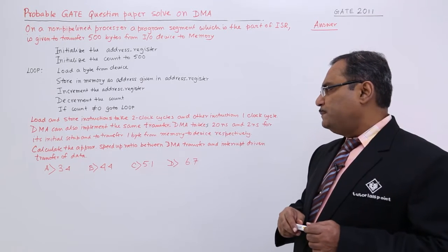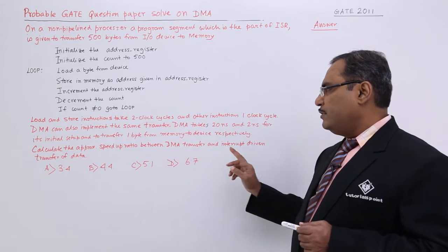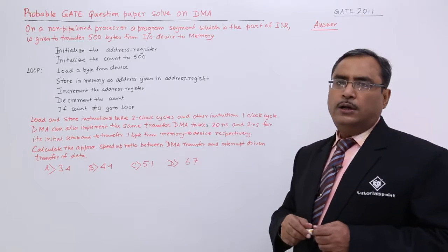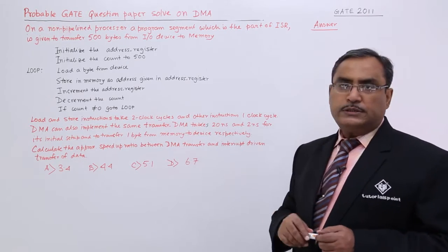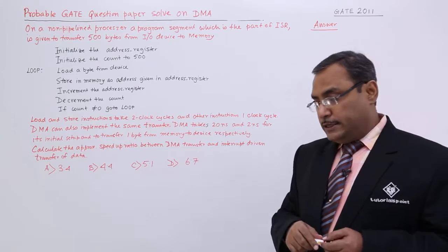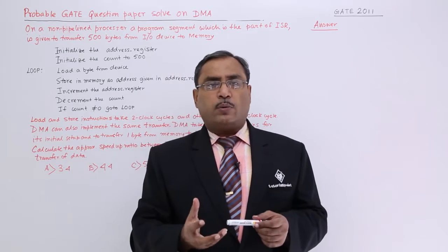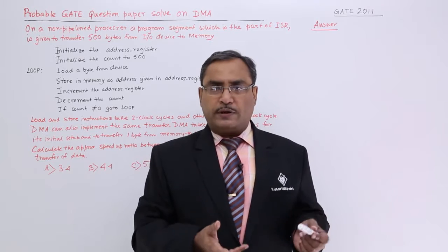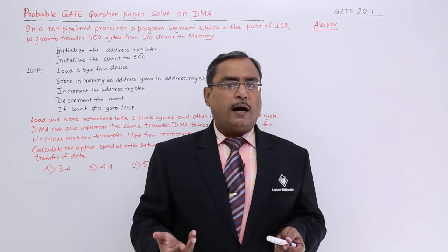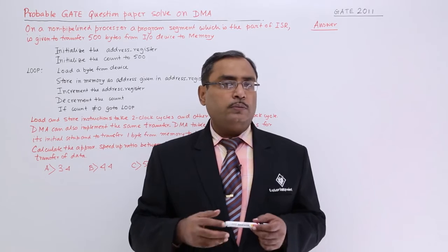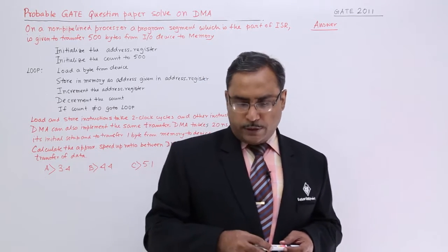The question asks us to calculate the approximate speed-up ratio between DMA transfer and interrupt-driven transfer of data, with four options given. DMA-related problems either ask for the total transfer time or the speed-up ratio. Let me show you how to solve this.